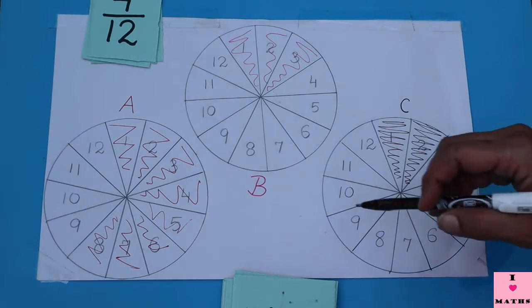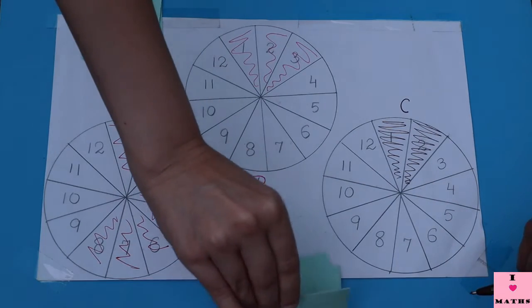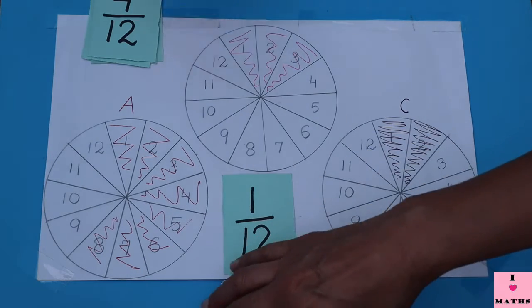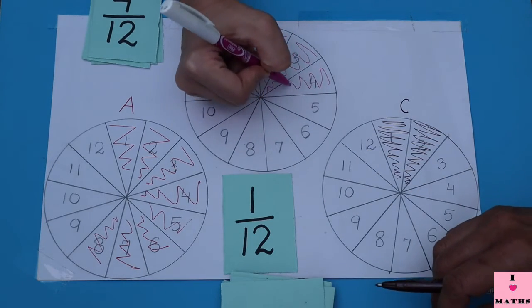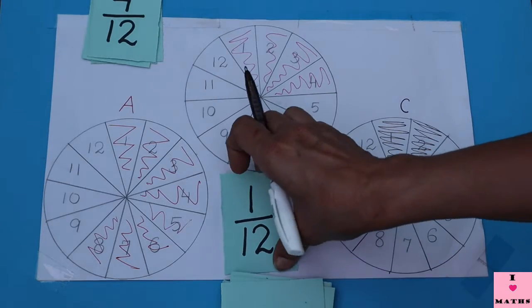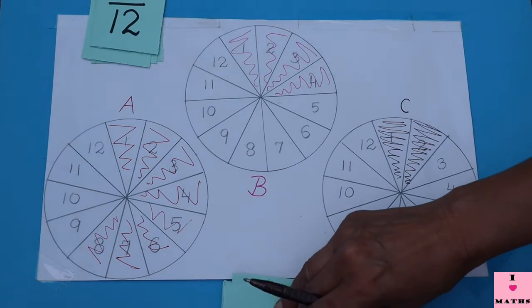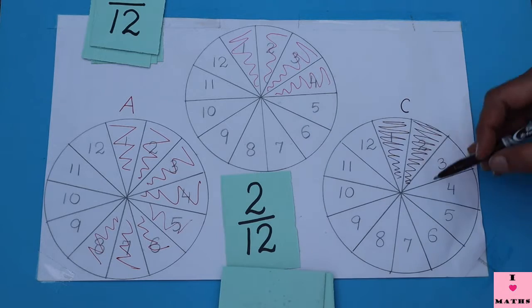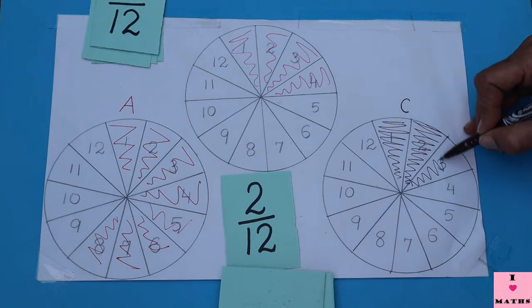Now it is the turn of B. 2 out of 12, so only 2 out of 12 have to be colored.